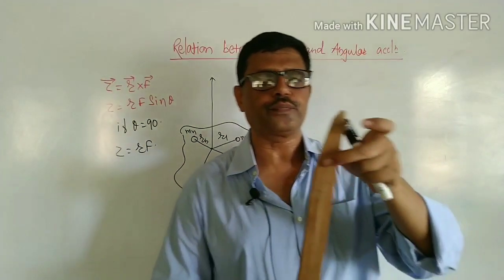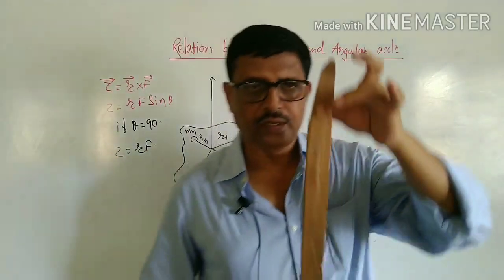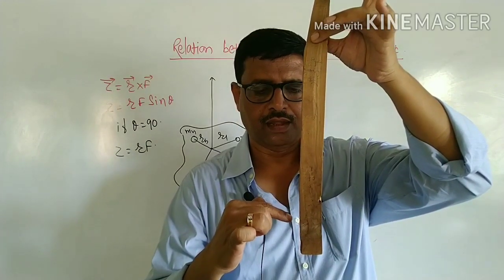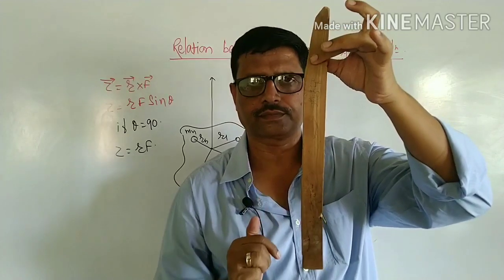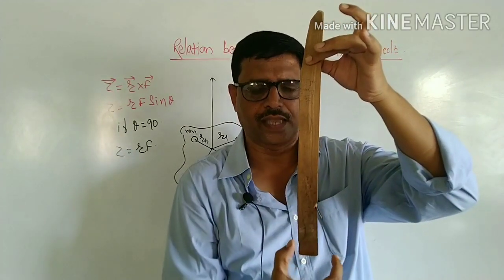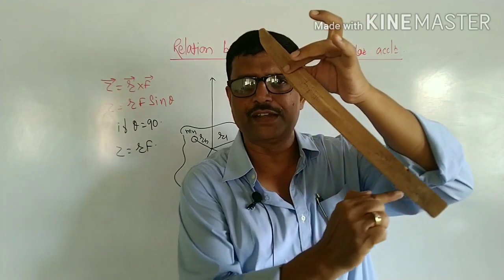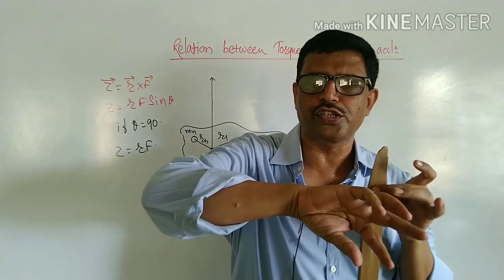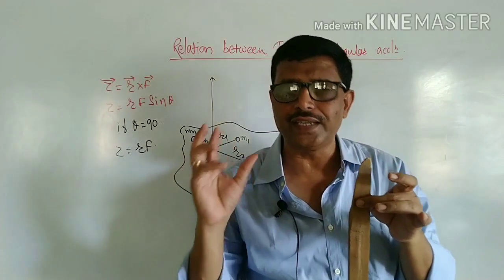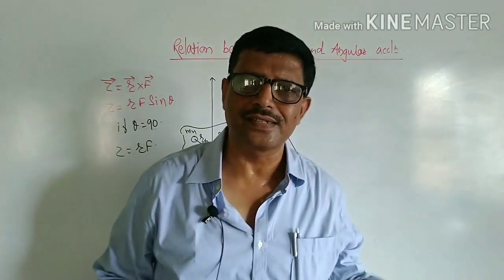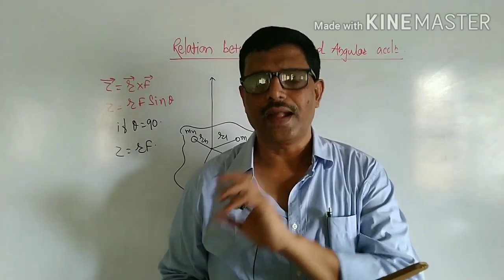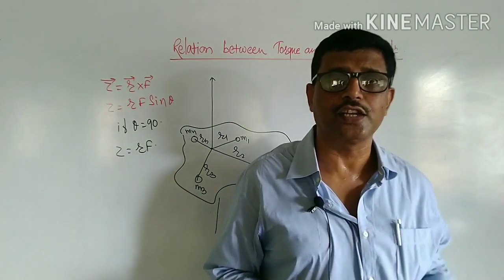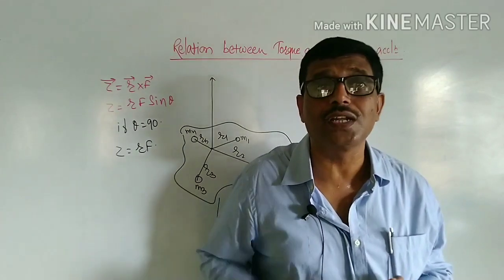What does this torque do? The torque initially makes the body rotate. If this body is at rest, with the application of torque it begins to rotate. Therefore, a body at rest is brought into rotation, or for a body which is actually in rotation, the torque either increases or decreases the angular speed. The change of angular velocity per unit time is called angular acceleration; therefore, torque is able to produce an angular acceleration.